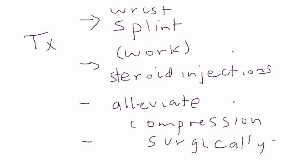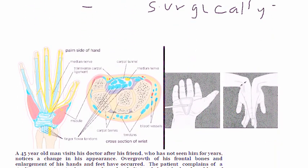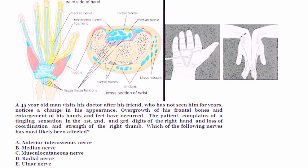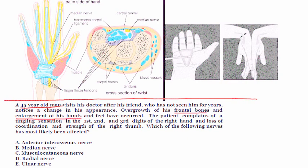I'll end with a clinical vignette. A 45-year-old man visits his doctor after his friend, who has not seen him for years, notices a change in his appearance. Overgrowth of his frontal bones and enlargement of his hands and feet have occurred. The patient complains of a tingling sensation in the first, second, and third digits of the right hand and loss of coordination and strength of the right thumb. Which of the following nerves has most likely been affected?